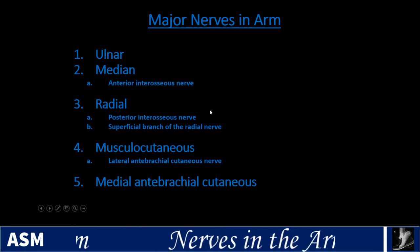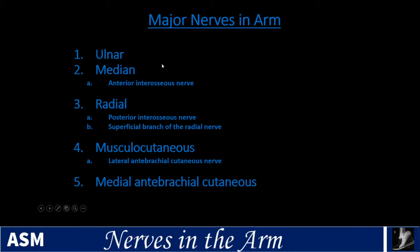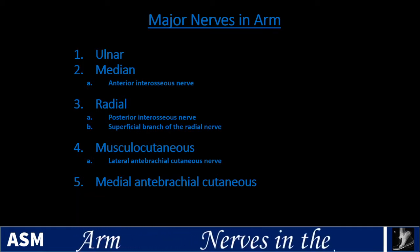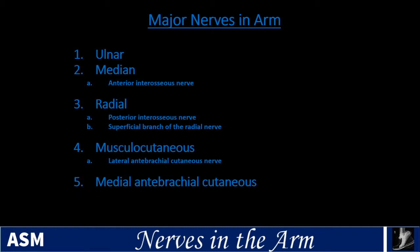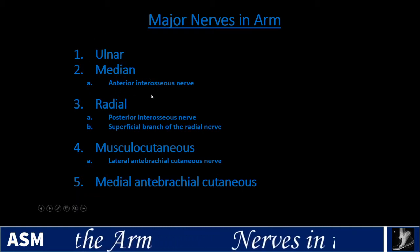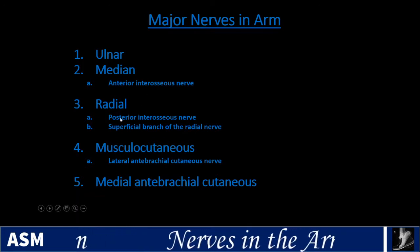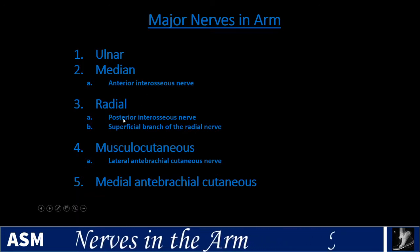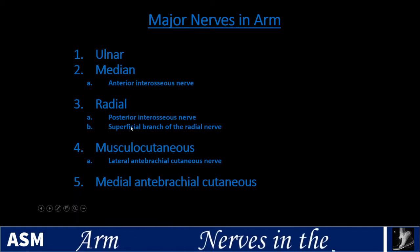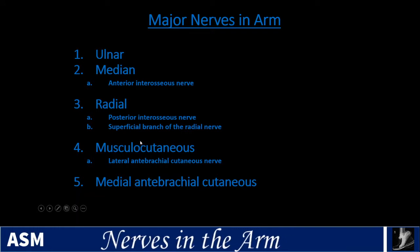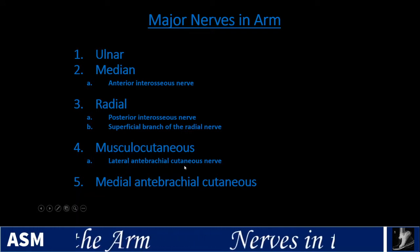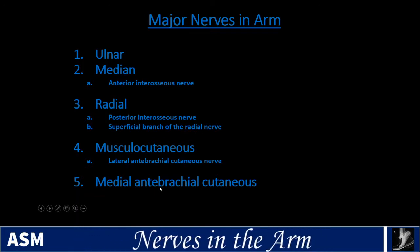The major nerves to include on your checklist when doing high-resolution MR of the elbow, humerus, and forearm are: the ulnar nerve; the median nerve and its branch the anterior interosseous nerve; the radial nerve with its two main branches — the posterior interosseous nerve (PIN, also called the deep branch) and the superficial branch of the radial nerve (sensory); the musculocutaneous nerve, which gives rise to the lateral antebrachial cutaneous nerve; and the medial antebrachial cutaneous nerve.